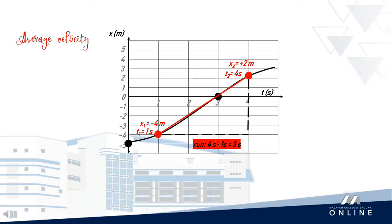And the rise, which in our formula is change in position, is 2 meters minus -4 meters, which is equal to 6 meters.